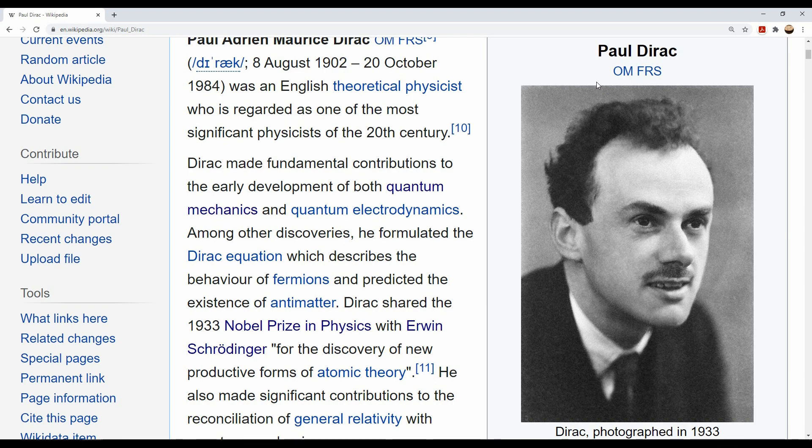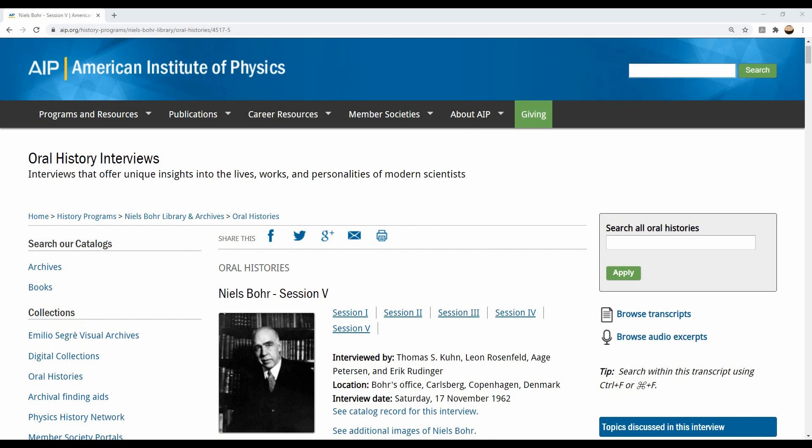Paul Dirac was one of the main contributors to the Copenhagen interpretation. He was a skilled mathematician, and two years prior to the EPR paper, he had won a Nobel Prize for his work in quantum mechanics. Let's look at how Dirac responded to the EPR paper with this Niels Bohr interview that occurred one day before he passed away.